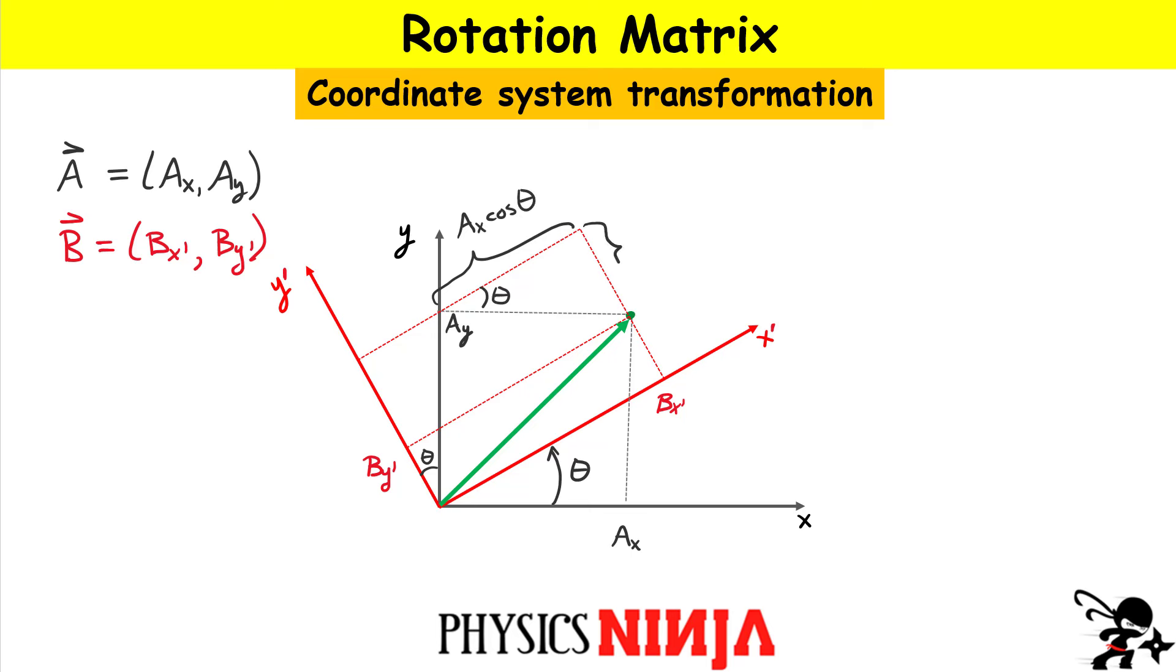This side right here would then mean that this here is AX sine of the angle theta. Okay, we have a few more to do. Let's go on this side. And remember, this whole length is AY.